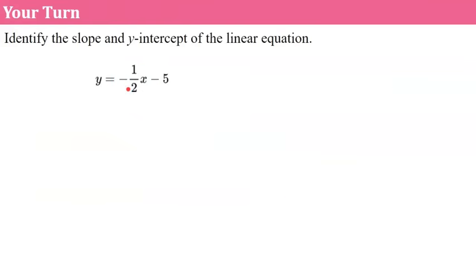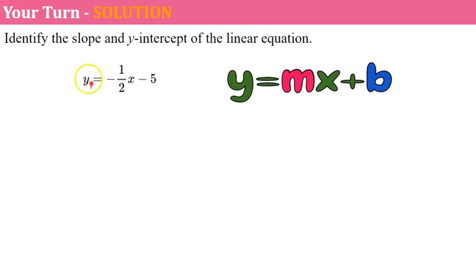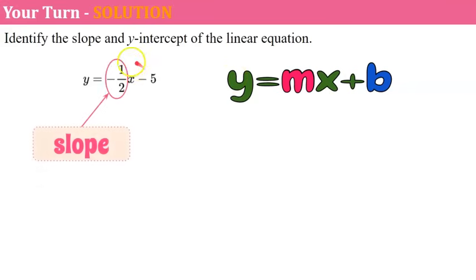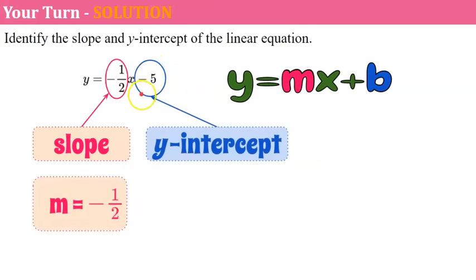Try this one. Please pause the video, identify the slope and the y-intercept, and come back and hit play when you're ready. Welcome back! This equation is solved for y, so it is in slope-intercept form. Our coefficient of x is m, our slope, which is negative one-half, and our constant, or b, is negative 5.